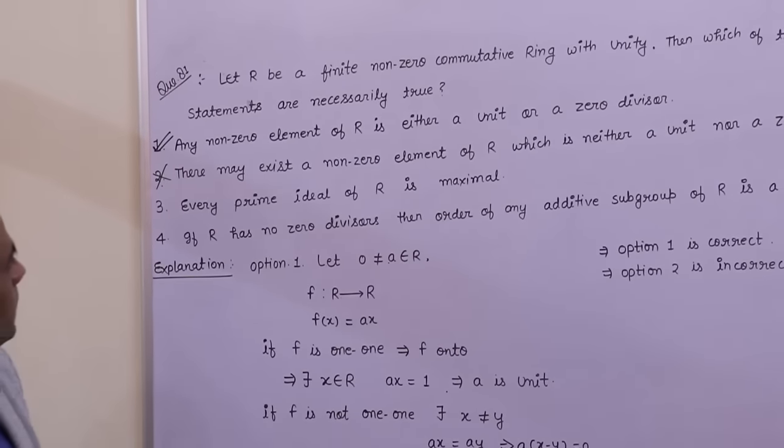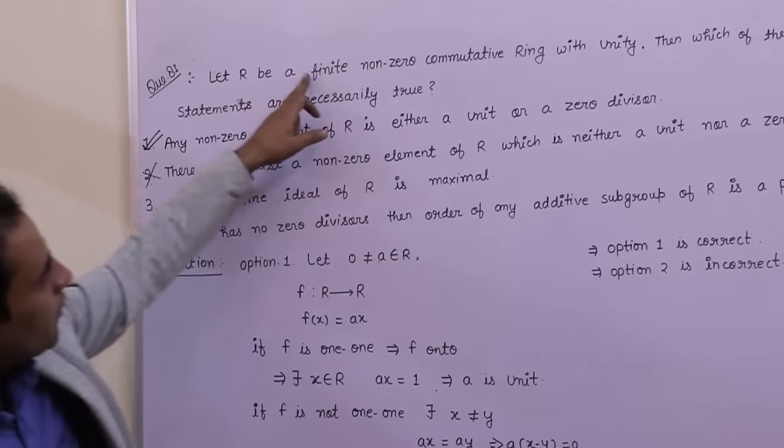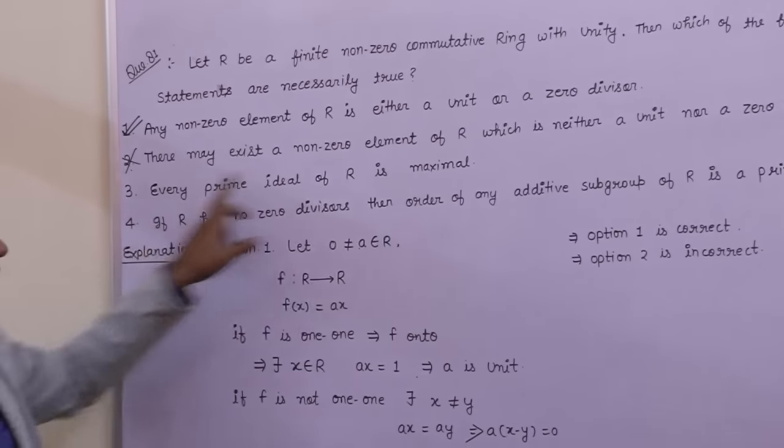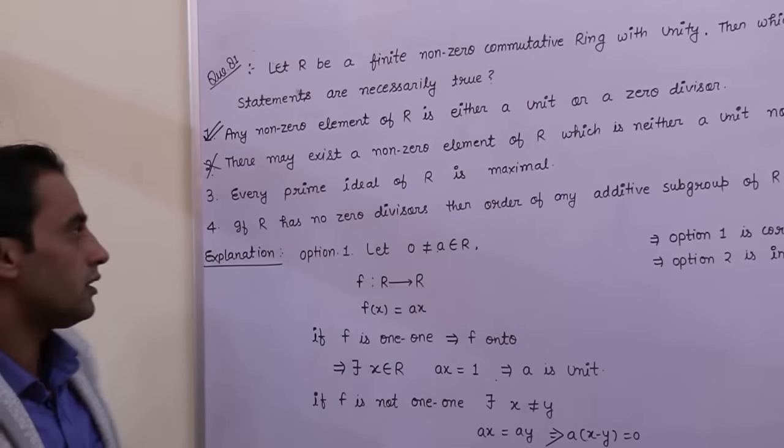Now for third option: in every finite CRU, every prime ideal is always maximal. So direct statement, third option is always true.